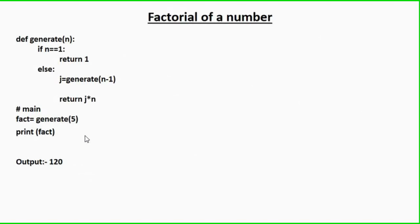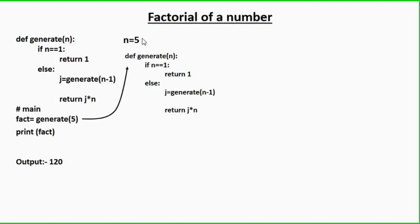Let's calculate the factorial of a number using the recursive function. You can see it's the same function with certain minor changes — there is no print statement, and I'm returning the value j multiplied by n. The first statement of the main function is 'fact = generate(5)', so we assume one more copy is called with value 5. n gets 5 and the if statement doesn't get satisfied, so we go to the else part.